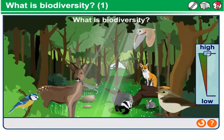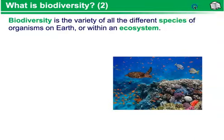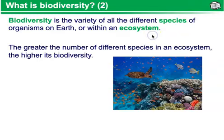Also, things like natural disasters can cause ecosystems to move from high biodiversity towards lower biodiversity. Biodiversity is the variety of all the different species of organisms on Earth or within a specific ecosystem. The greater the number of different species in an ecosystem, the higher the biodiversity.